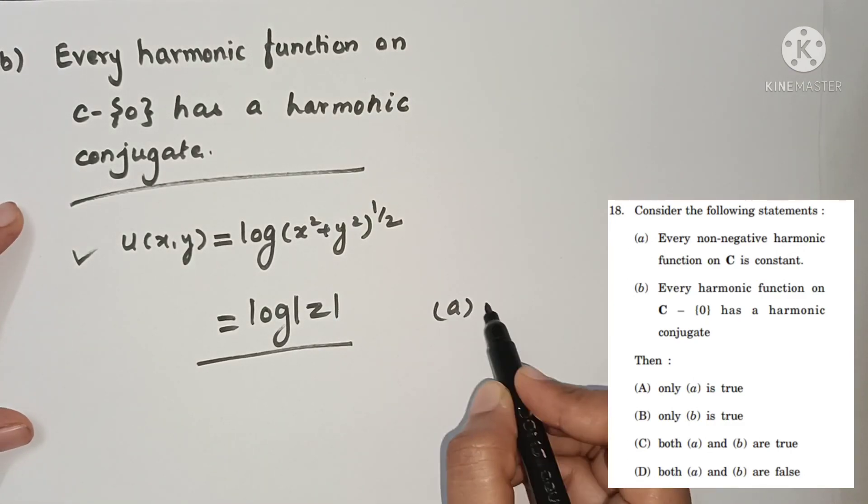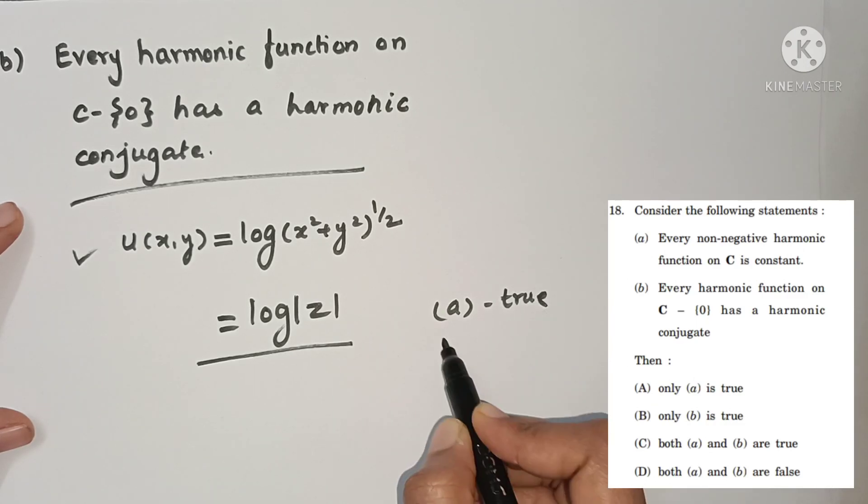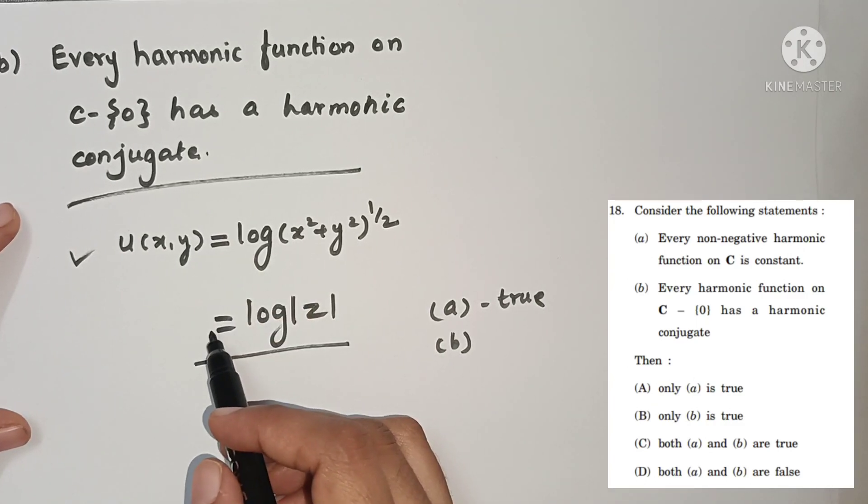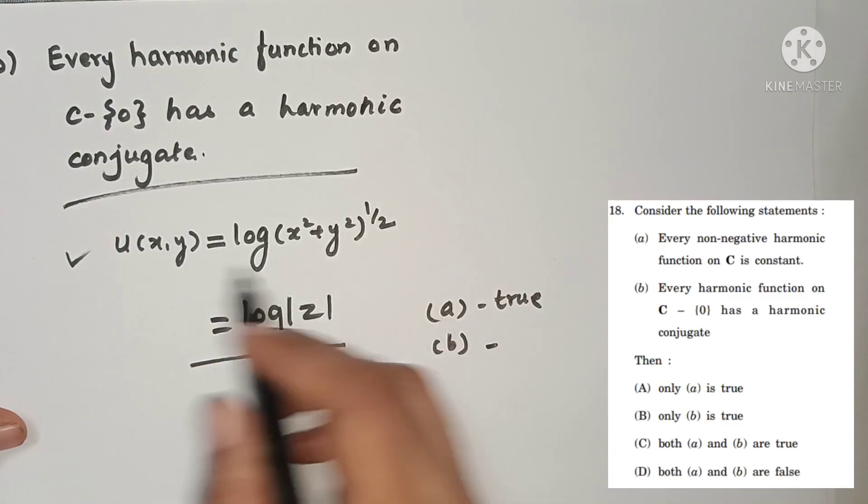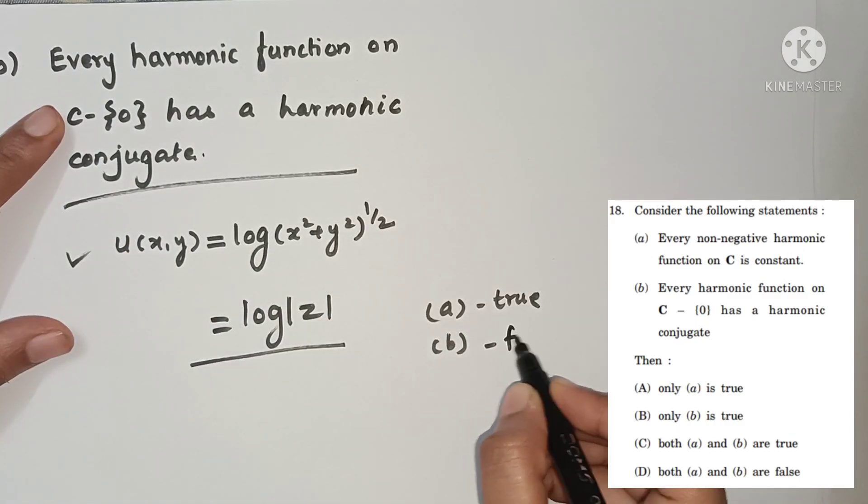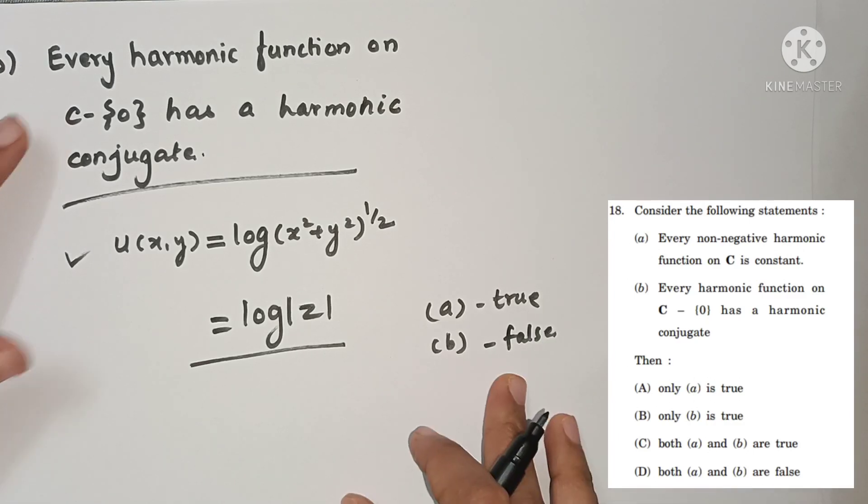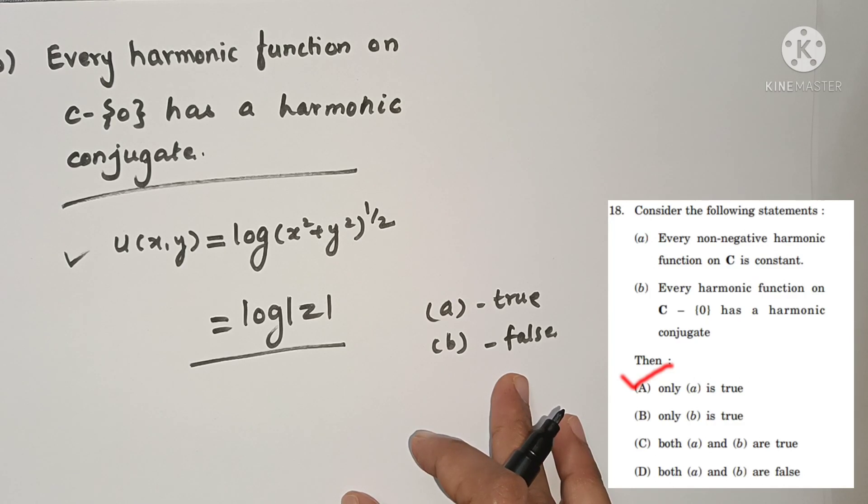Here we have statement A is true. For statement B, we have the example which will discard this statement. So statement B is a false statement. So here option A will be correct and only A is true.